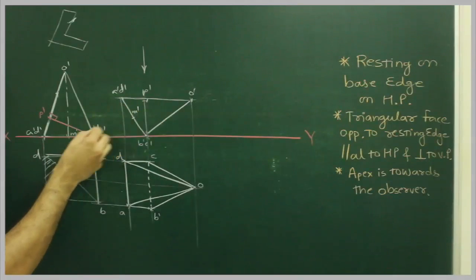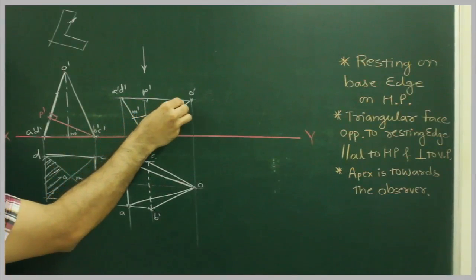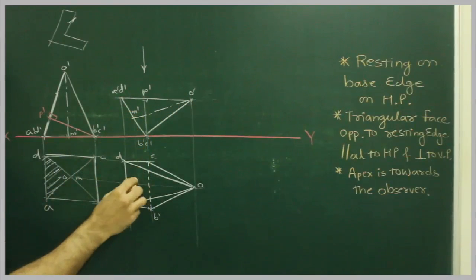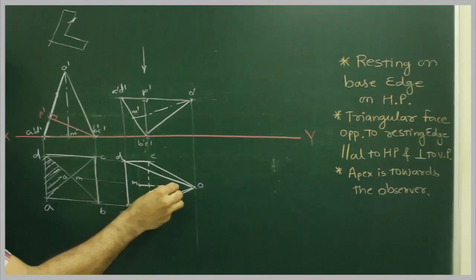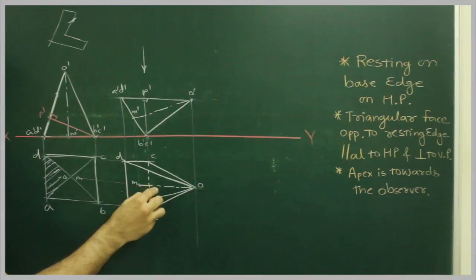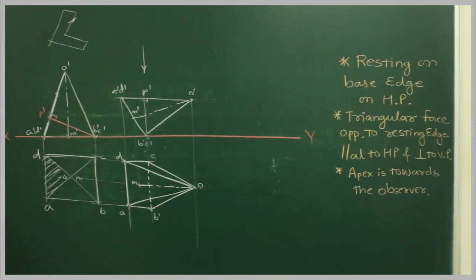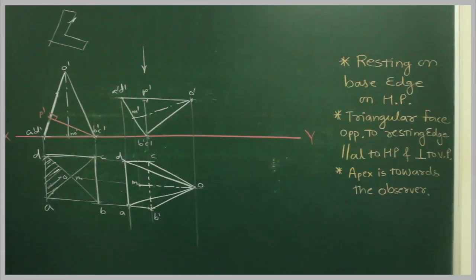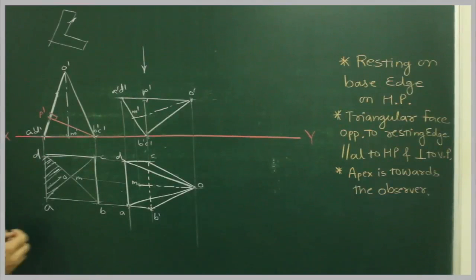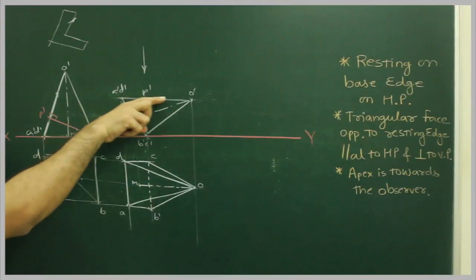We will mark point M dash — this is the axis. Project M down; this is M, so we will get the axis in the top view also. This is the triangular face which is parallel to HP, and it is perpendicular to the vertical plane. But now we have to draw the apex towards the observer. Where is the apex? The apex is over here. Now we have to make this surface parallel.